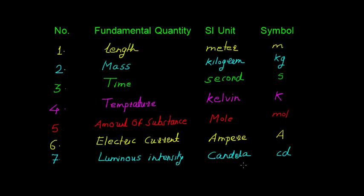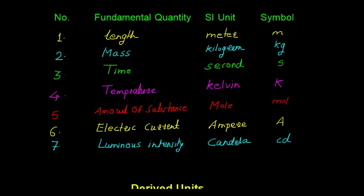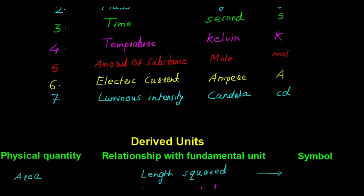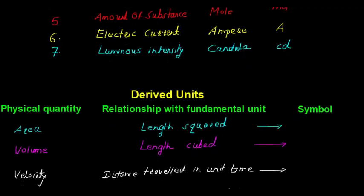The units of all physical quantities can be derived from the seven fundamental units. These units are known as the derived units. Derived units are products of power of base units. The number of quantities in science is without limit, and it is not possible to provide the complete list of derived quantities and their derived units.